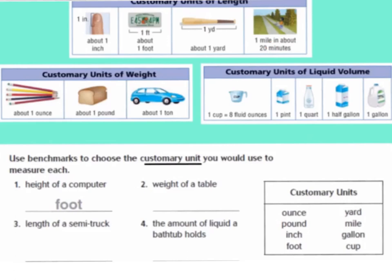Now, what if we wanted to weigh something? About one ounce would be a few colored pencils — it's very light. About one pound would be a whole loaf of bread. And about one ton is very big — that would be about the size of a car or an elephant.